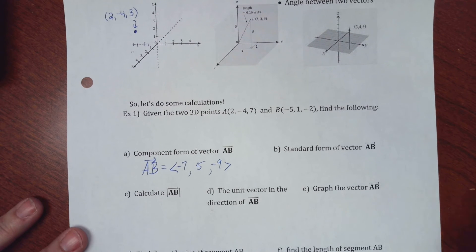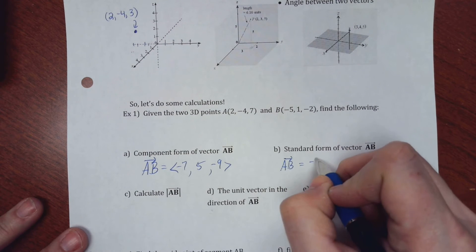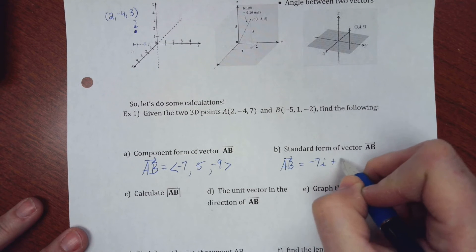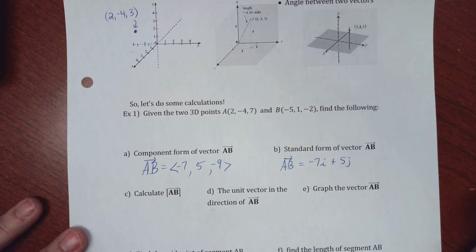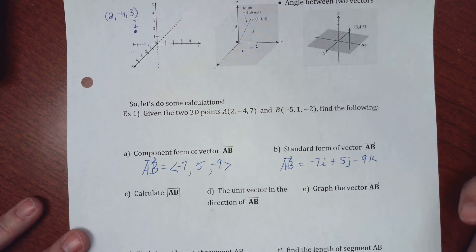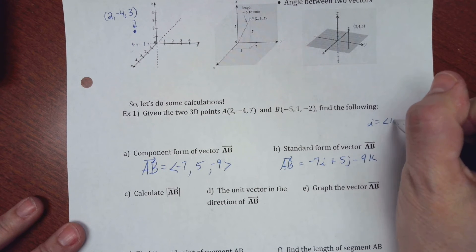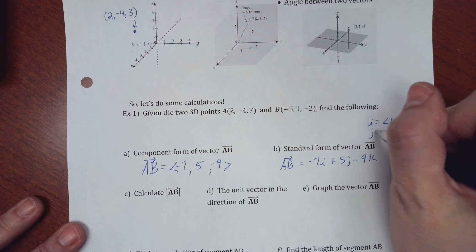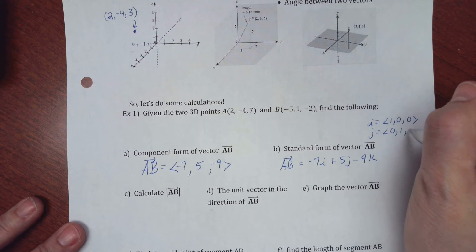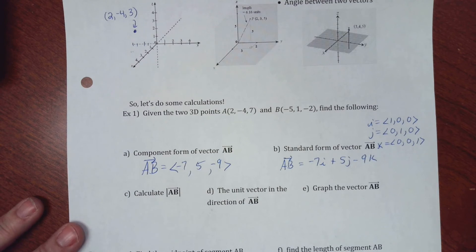If I want the standard form, that would be negative 7i plus 5j. And then the third letter, you guessed it, is k minus 9k. So basically, in this new setup here, i is 1, 0, 0, because it's still 1, 0 in the x direction. j is 0, 1, but you put a 0 there. And k is 0, 0, 1. And it is your up and down direction.